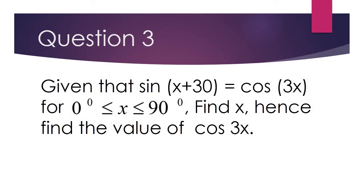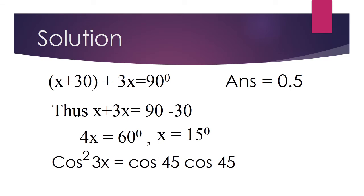Question 3: Given that sin(x + 30) is cos 3x, for 0 degrees ≤ x ≤ 90 degrees, find x, hence find the value of cos 3x. Solution: (x + 30) + 3x = 90 degrees, therefore 4x = 60 degrees, x = 15 degrees. Cos 3x is cos 45 multiplied by cos 45, and that gives us 0.5.